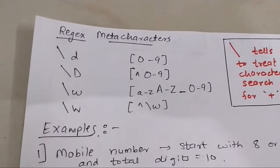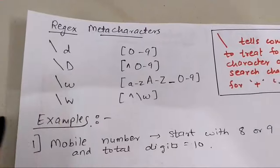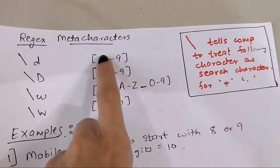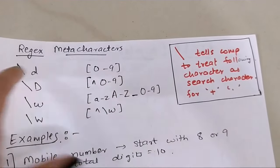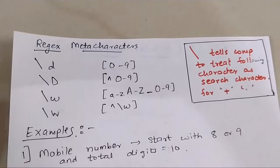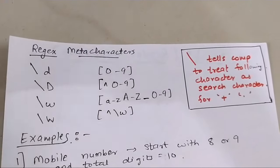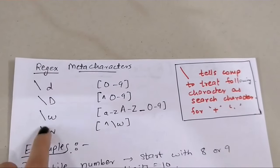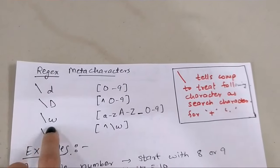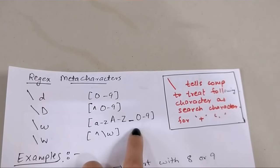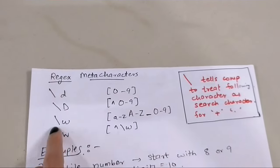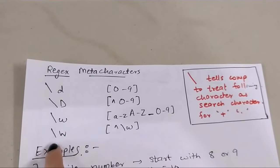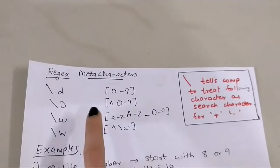Now let's understand regex meta characters. Meta characters are basically shorthand forms. Instead of writing [0-9] we can simply write backslash-d. Capital \D is the negation. Backslash-w means a-z, A-Z, and 0-9 all together. Capital \W is the negation of that.